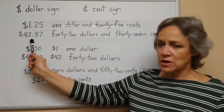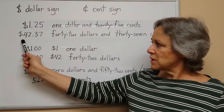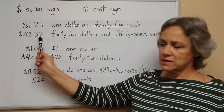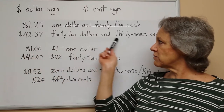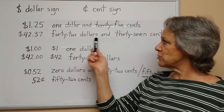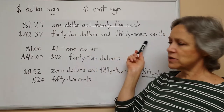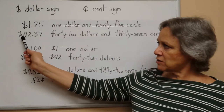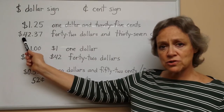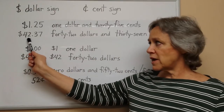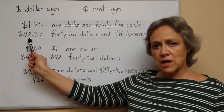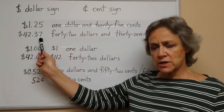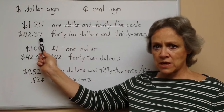Here's another example. This is forty-two dollars and thirty-seven cents, and that's what I have written here: forty-two dollars and thirty-seven cents. Again, the dollar sign goes first, then the number of dollars, then the decimal point, and then the number of cents.